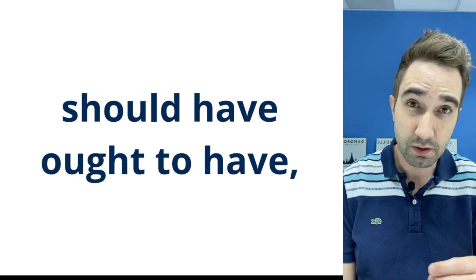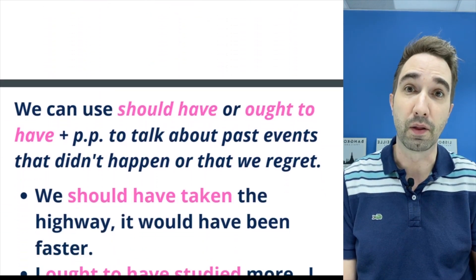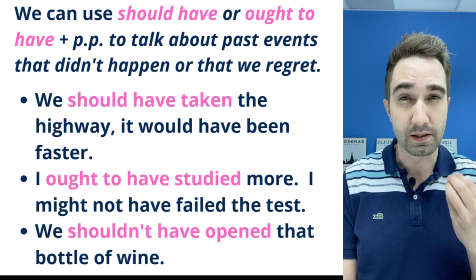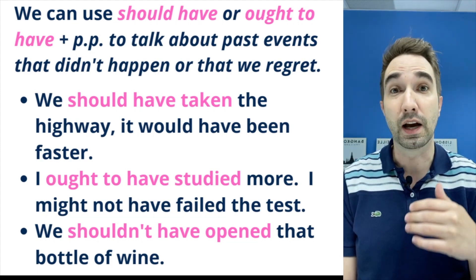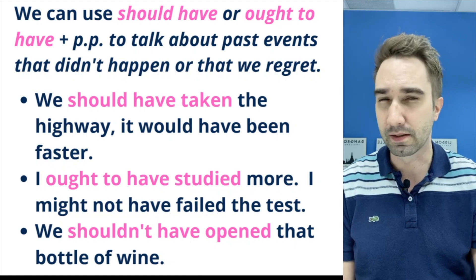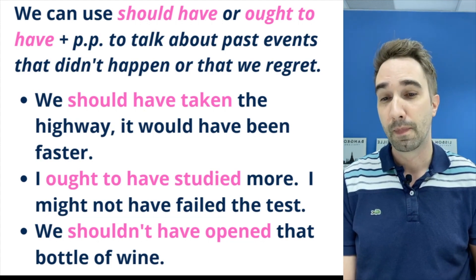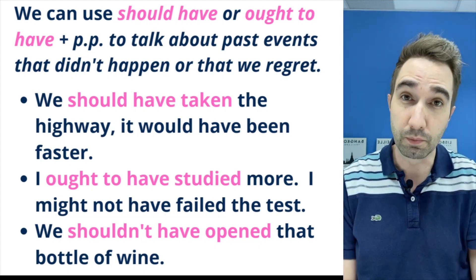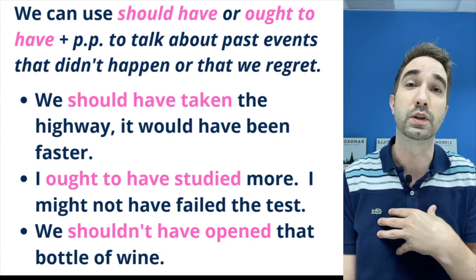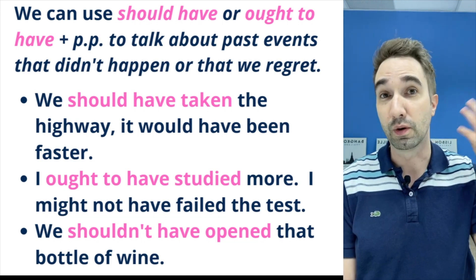Now let's look at should have or ought to have plus a past participle to talk about the past. Usually we use this to express regret. For example: 'I had too many beers last night — I shouldn't have drunk so much.' We saw 'we should take the highway'; if we didn't take it and it was slow, we'd say 'we should have taken the highway — it would have been much faster.'